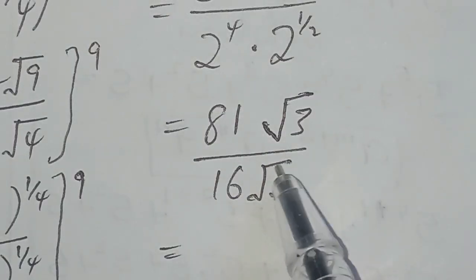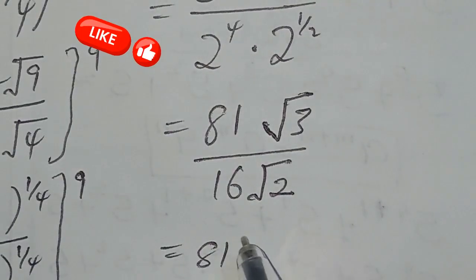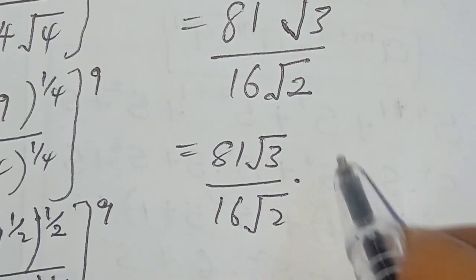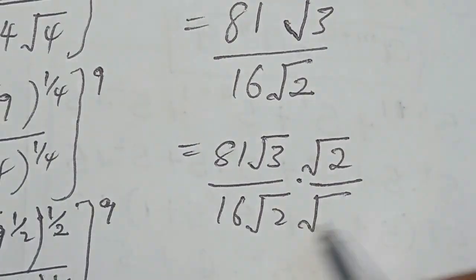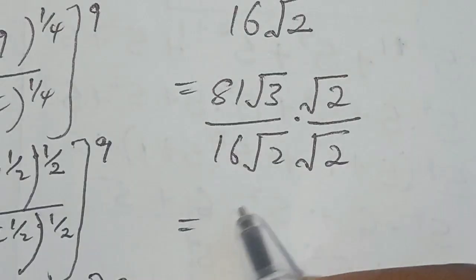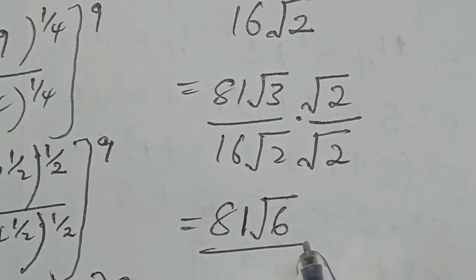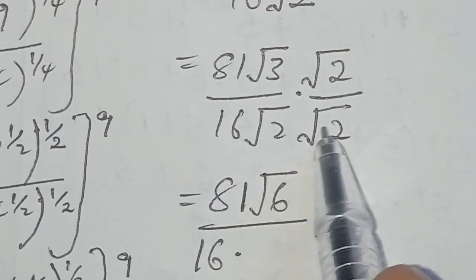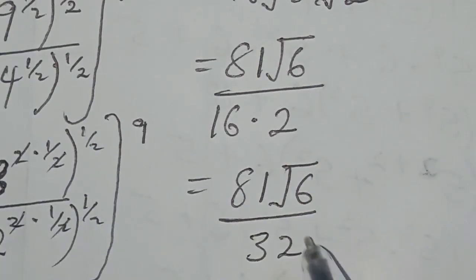From this expression we rationalize. We have 81 times square root of 3 over 16 times square root of 2, rationalized by multiplying the numerator by square root of 2 and the denominator by square root of 2. That gives us 81 times square root of 6 for the numerator. For the denominator, 16 multiplied by 2 gives us 32. So the final answer using Method 2 is 81 square root of 6 over 32.